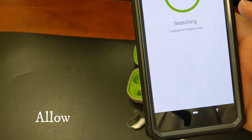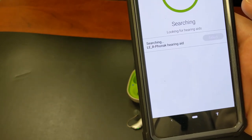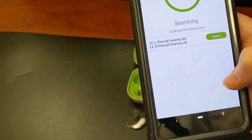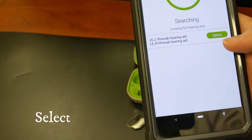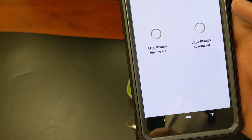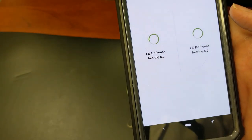Now it'll take 10 or 15 seconds to find both hearing aids. Here we see the right one is found and now the left one. Once they're both found the select button turns green. You can tap that and it will take another 10 seconds or so to finish loading.